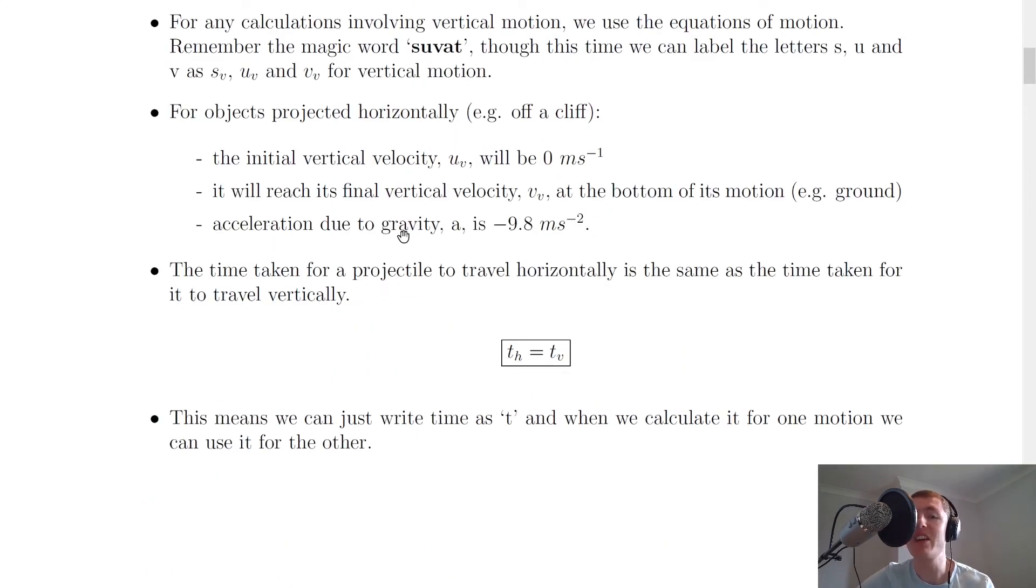Lastly, the acceleration due to gravity a is -9.8 metres per second squared. That's been the case for the previous types of projectile motion that we've looked at already.